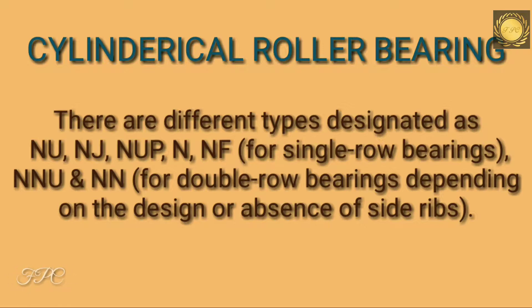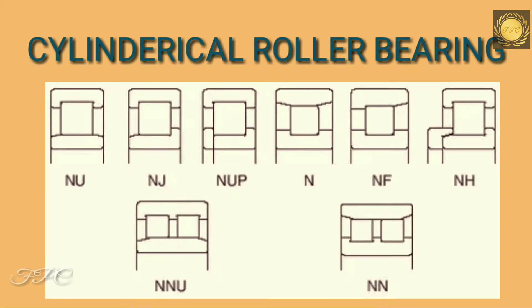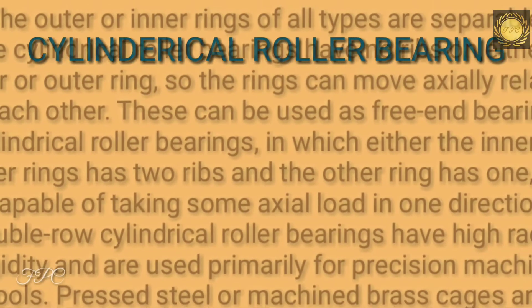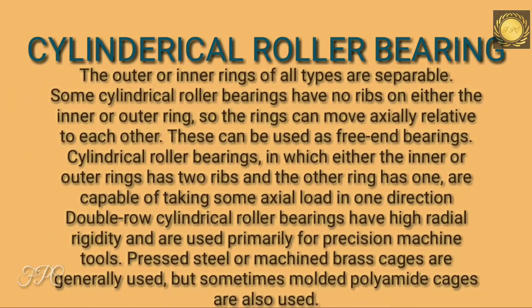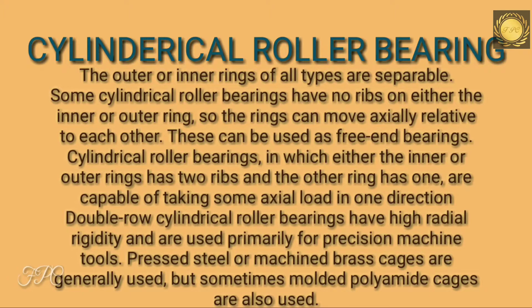Nnu and Nn for double row bearings, depending on the design or absence of side ribs. The outer or inner rings of all types are separable. Some cylindrical roller bearings have no ribs on either the inner or outer ring, so the rings can move axially relative to each other. These can be used as free end bearings. Cylindrical roller bearings in which either the inner or outer ring has two ribs and the other ring has one are capable of taking some axial load in one direction.